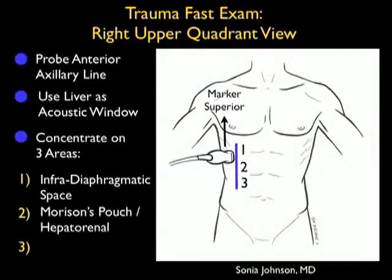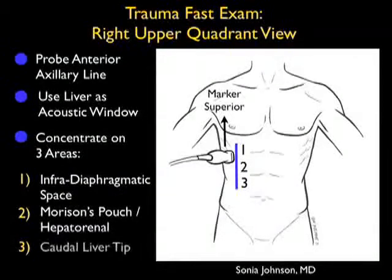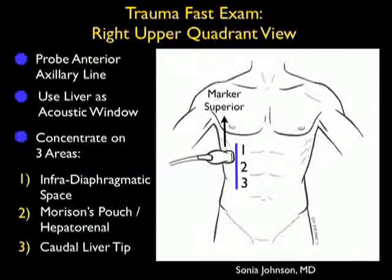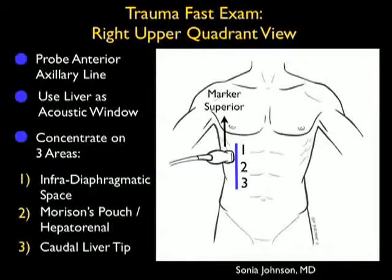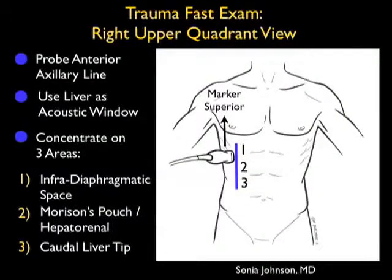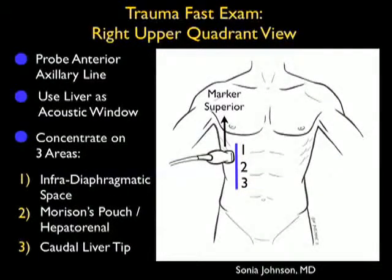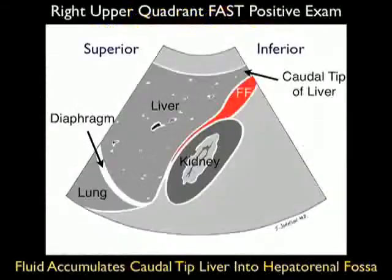Position 2 is the traditional Morrison's pouch or hepatorenal interface, and position 3, to round out the exam, is looking at the caudal liver tip representing the beginning of the right pericolic gutter.